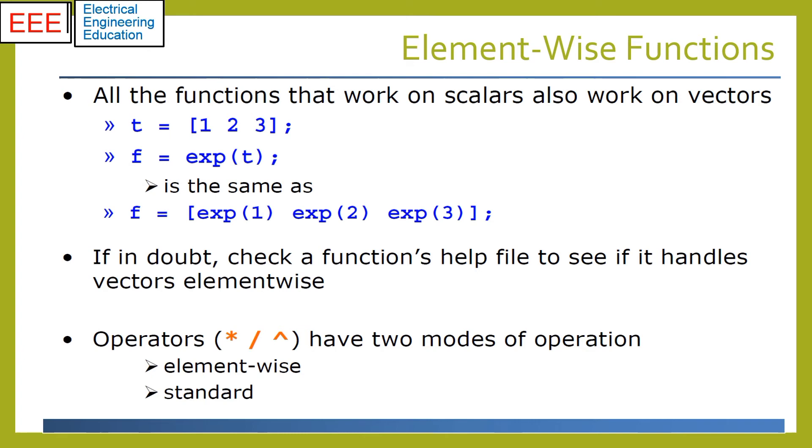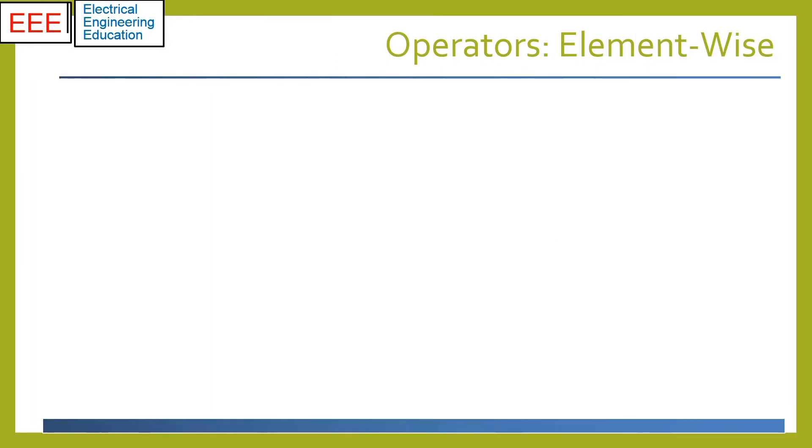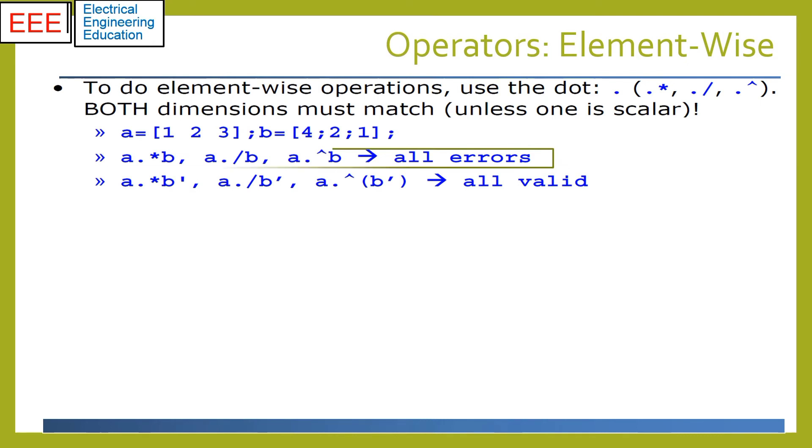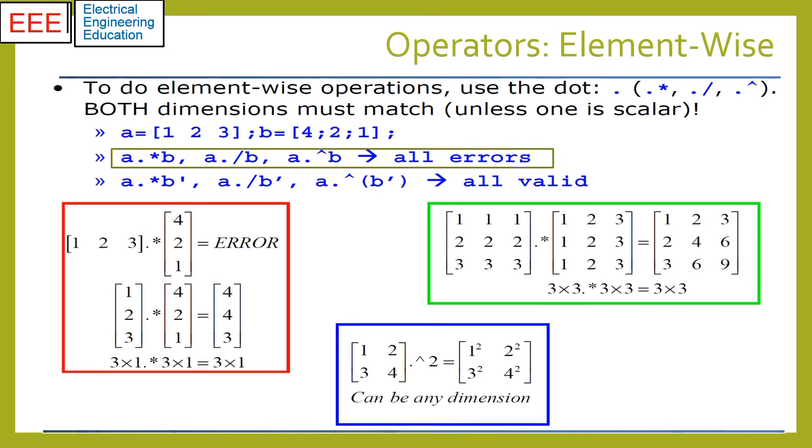The multiplication, division, and power operations have both standard and element-wise modes of operation. Please note for element-wise operation, the vectors or matrices must have the same sizes. The resulting vector or matrix will have the same size. To scale every element of a matrix, the scaling matrix should have the same size so corresponding elements of both matrices will multiply or divide depending on the operator.